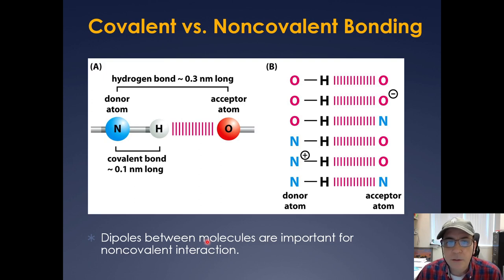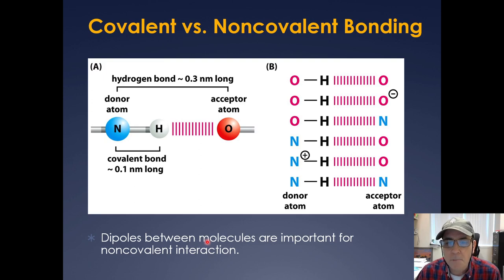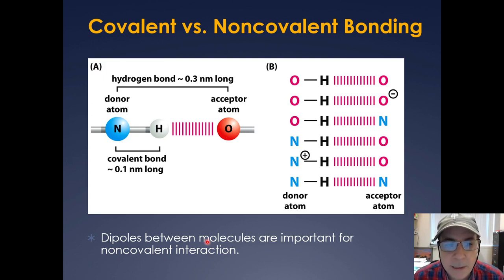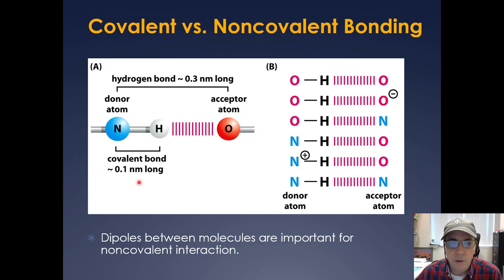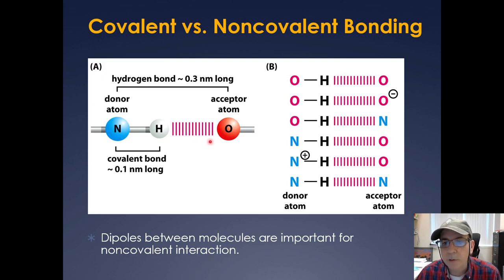You really need to know covalent versus non-covalent bonds — these are very important in a cell. A covalent bond is tightly associated and requires a lot of energy to be broken, and tends to be a lot shorter. Hydrogen bonds are much further apart, with a donor arm and an acceptor arm. These become important in everything from the way proteins fold to the way DNA and RNA associate with one another.